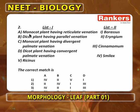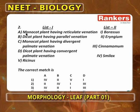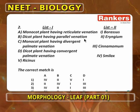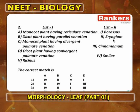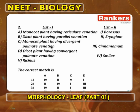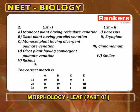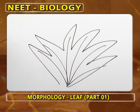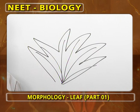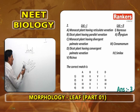This is a matching question. Monocot plant having reticulate venation is Smilax, so A is 4. Dicot plant having parallel venation is Eryngium — Eryngium and Calophyllum are two dicots with parallel venation. Monocot plant having divergent palmate venation is found in Borassus. Divergent palmate venation means many midribs are present and all enter their independent lobes.